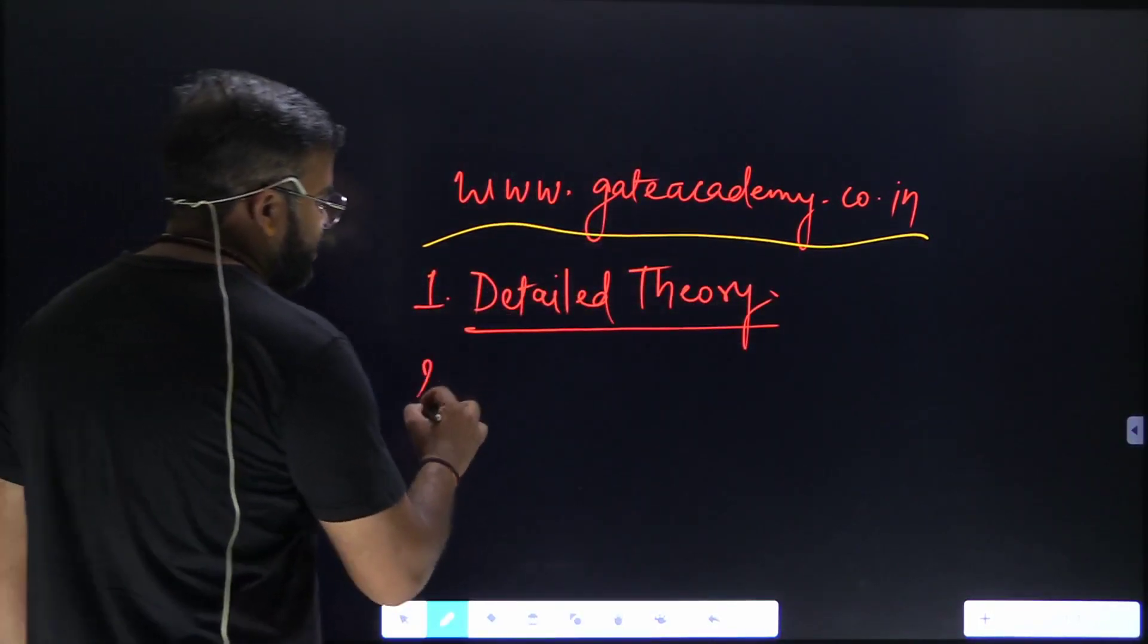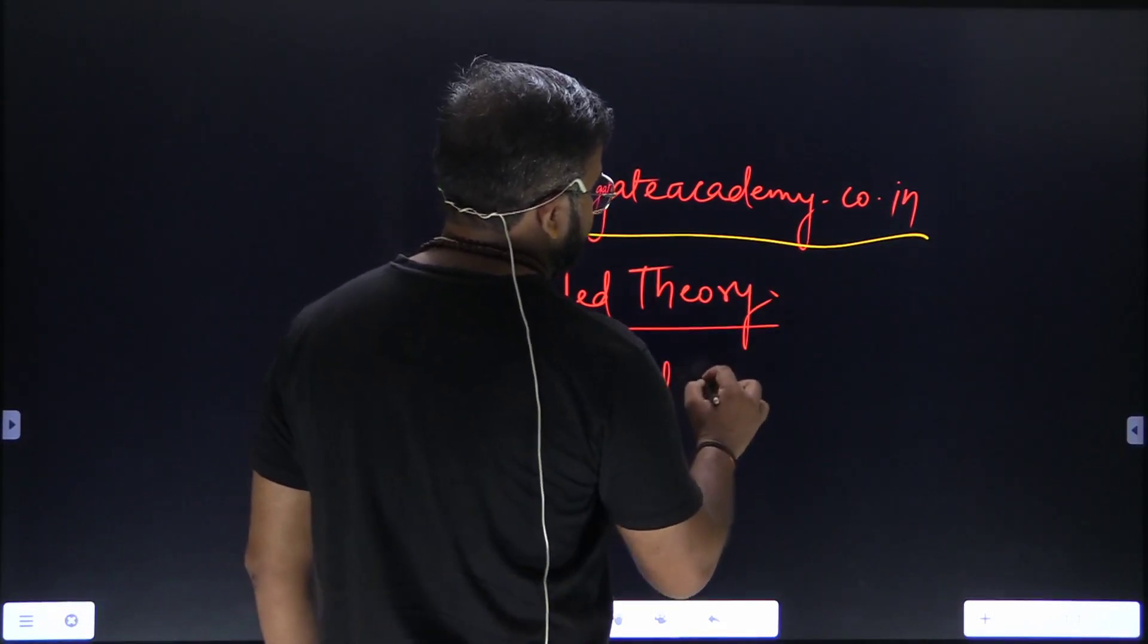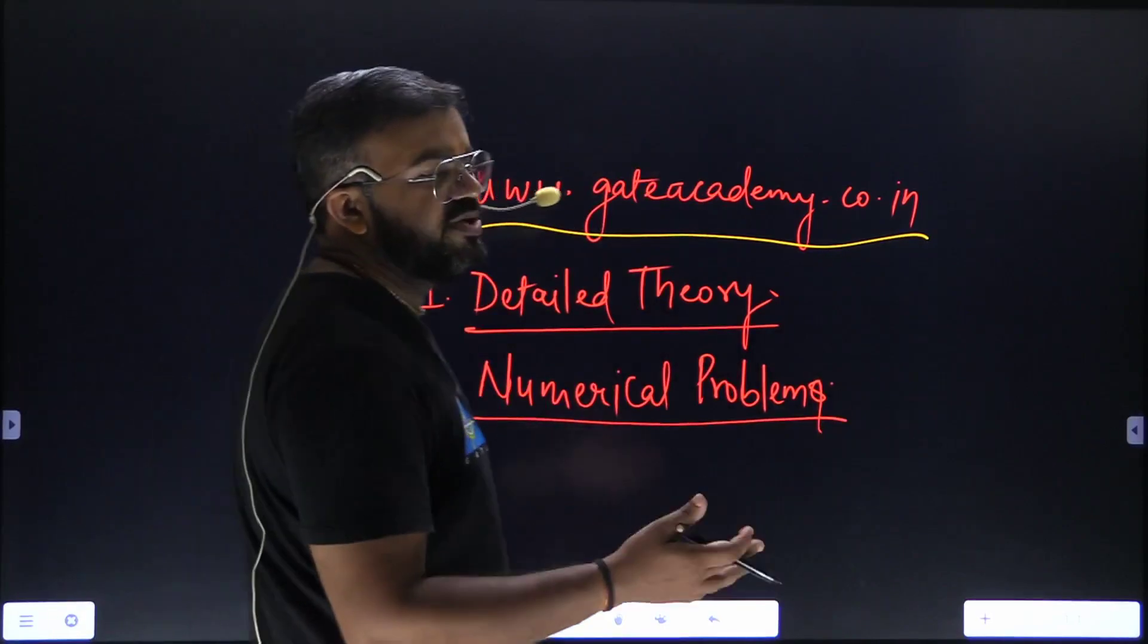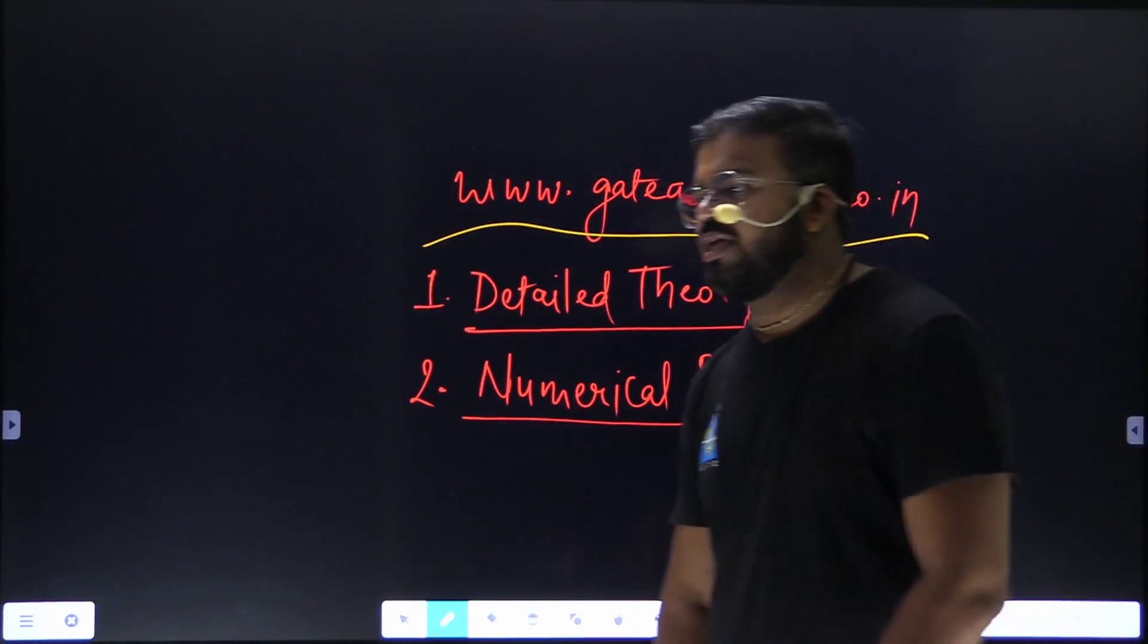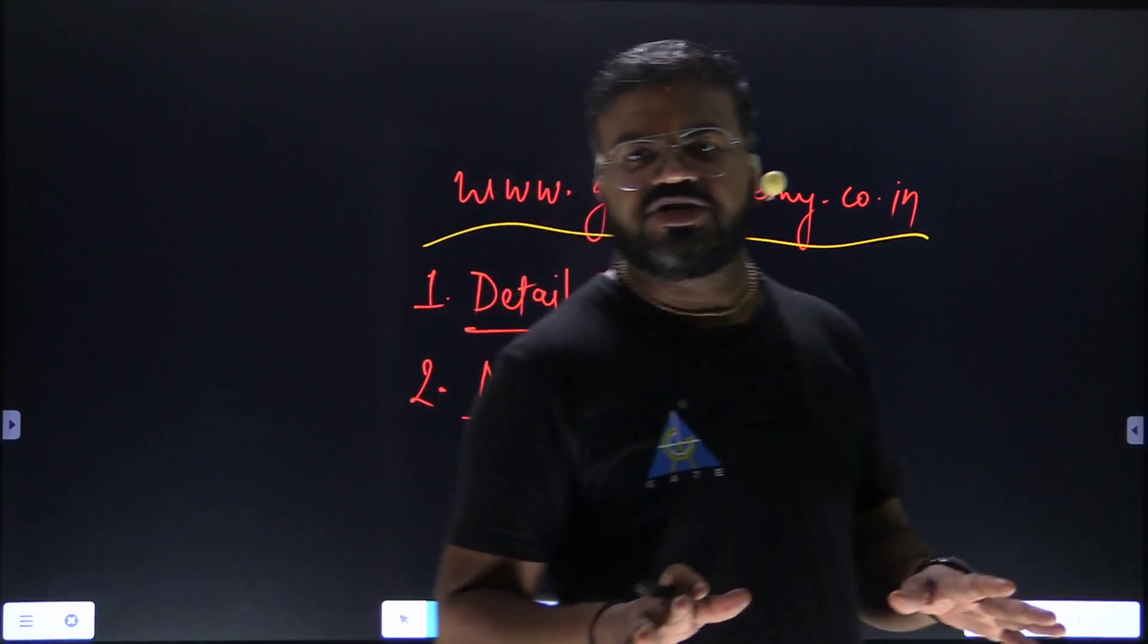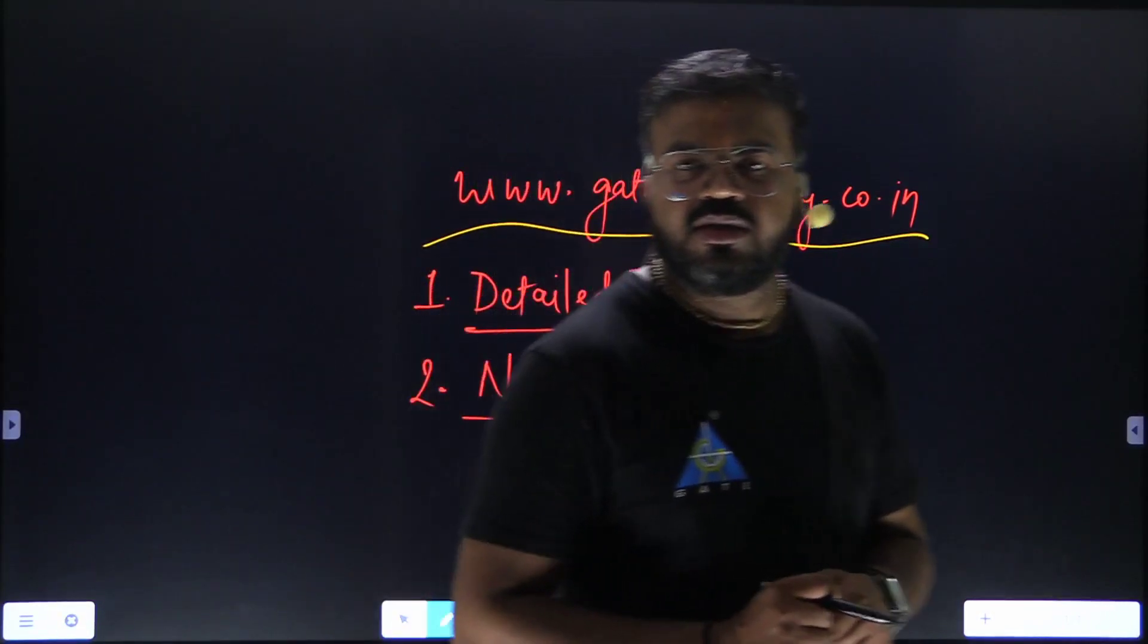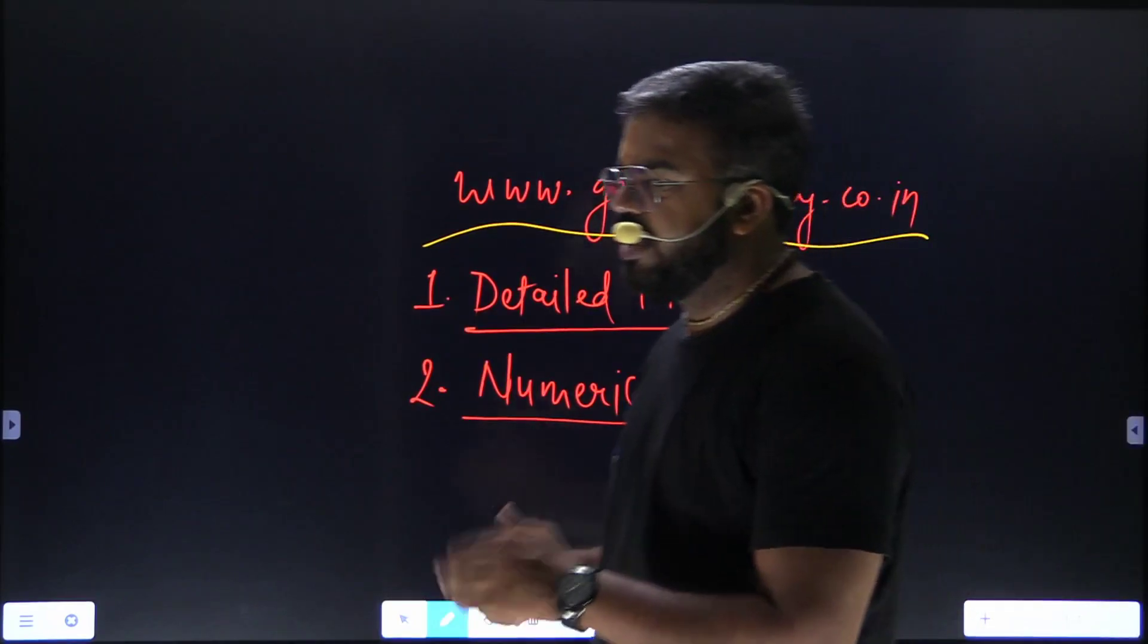Number two is the numerical problems, because in GATE examinations you are not going to be given three hours just to write descriptive answers to eight or ten problems as you do in your university exams. You will be given three hours of time to solve 65 different questions from 65 different topics and 12 to 13 different subjects.